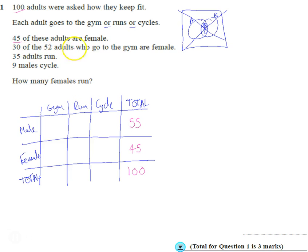30 of the 52 adults who go to the gym are female. So 52 adults go to the gym. 30 of them are female, meaning that 22 must be male using those. 35 adults run.